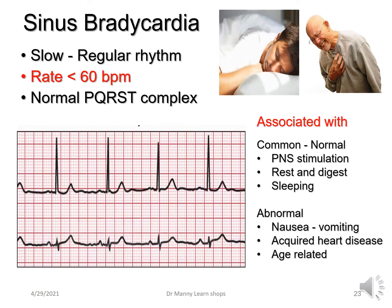Sinus bradycardia is a slow regular rhythm at a rate of less than 60 beats per minute, with a normal PQRST complex. It's associated with resting, sleeping, and parasympathetic nervous system stimulation. But it can occur with nausea and vomiting, acquired heart disease, and it could be age-related.